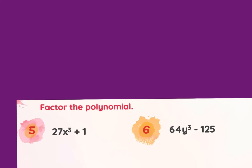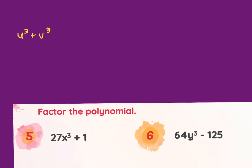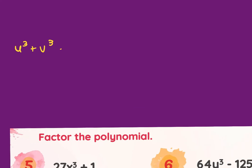Quick refresher on the cubes: if it's u³ plus v³, you cube root each of them, square the first one, multiply the two together, square the last one, and then the signs go same, opposite, always positive — SOAP.